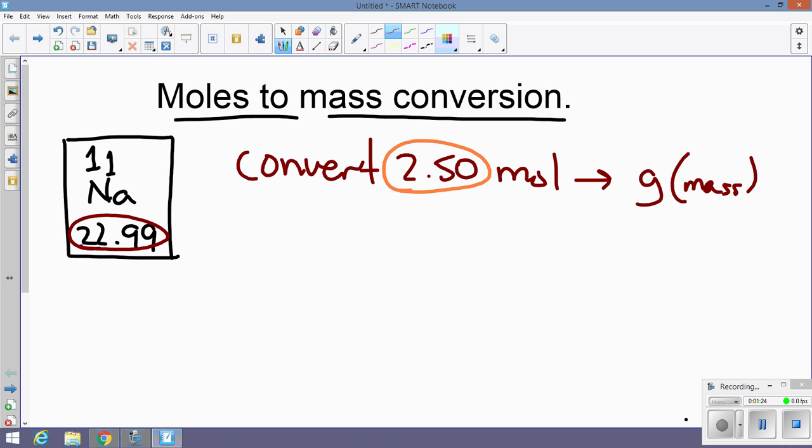We will do: given to me, 2.50 moles of sodium, because that's the element I'm dealing with. So moles of sodium to grams. Do a little T. At the bottom, if I have moles on top, I'm going to have moles at the bottom. And the standard is 1 mole.